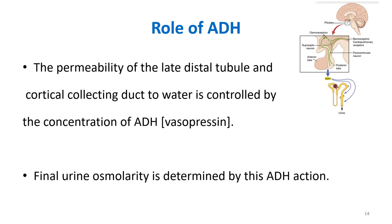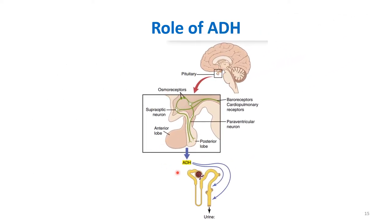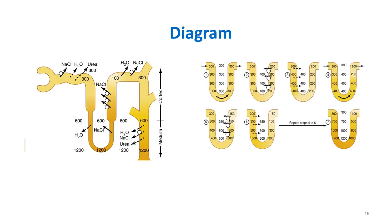Then write about the role of ADH — antidiuretic hormone. The permeability of the late distal tubule and the cortical collecting duct to water is controlled by the concentration of ADH or vasopressin. ADH is secreted from the pituitary and acts on the distal convoluted tubule and collecting duct, deciding the final urine osmolarity based on the plasma osmolarity. For diagrams, draw the loop of Henle showing its permeability characteristics and the diagram showing how the renal medullary concentration gradient is established. That covers countercurrent multiplication.